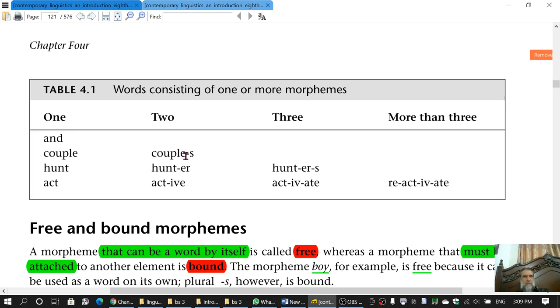Couples has couple one morpheme and S another morpheme, so it has two morphemes. The same is the case with hunter, hunt and ER. Same is the case with active, act and IVE. And therefore, these are complex morphemes.